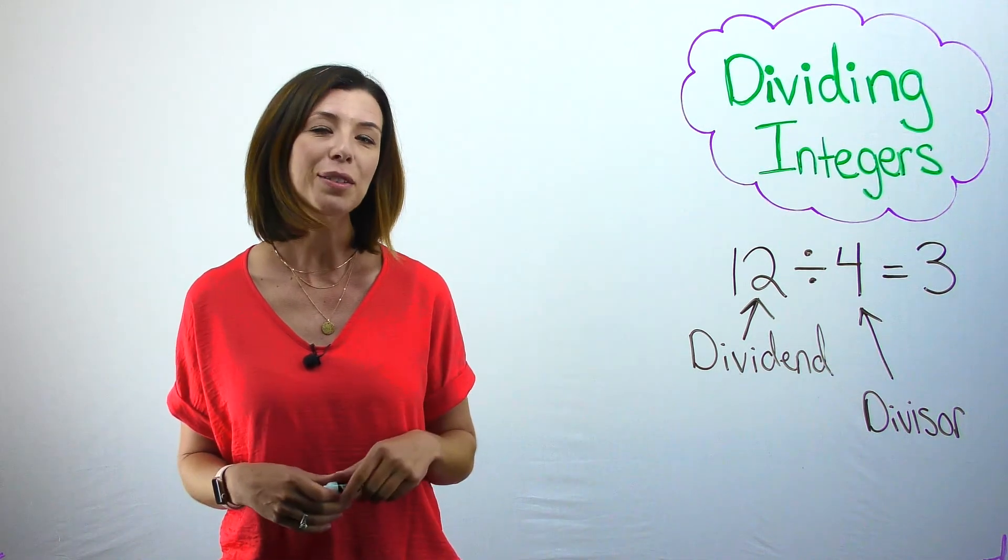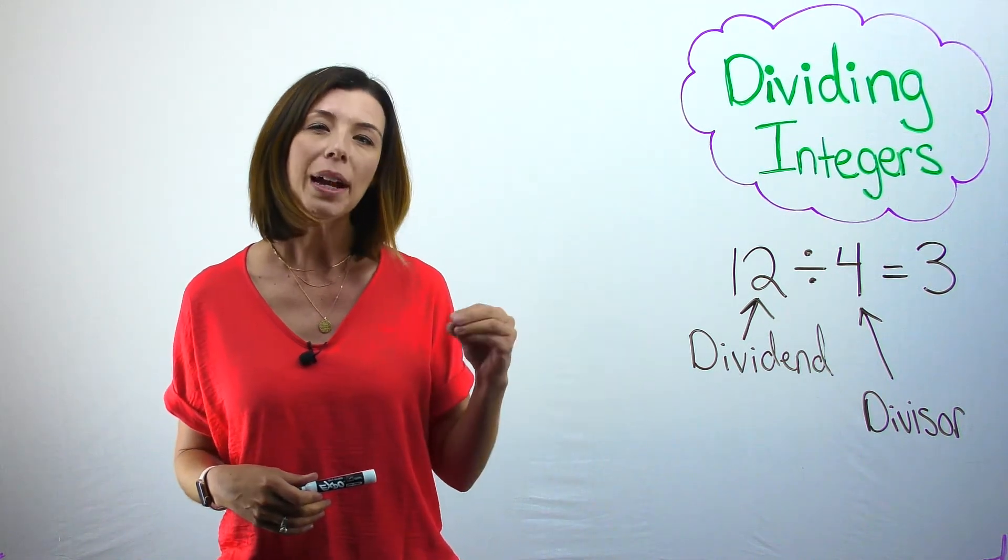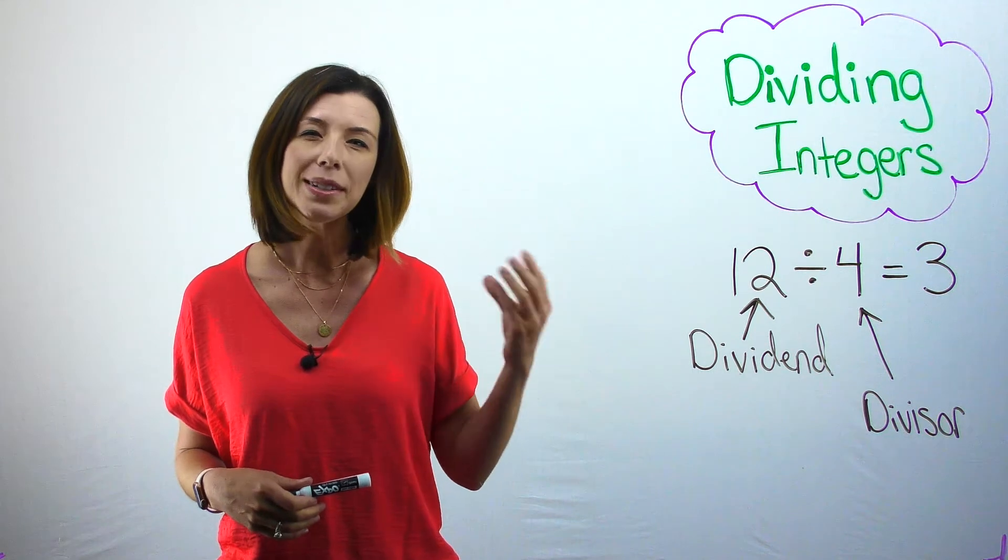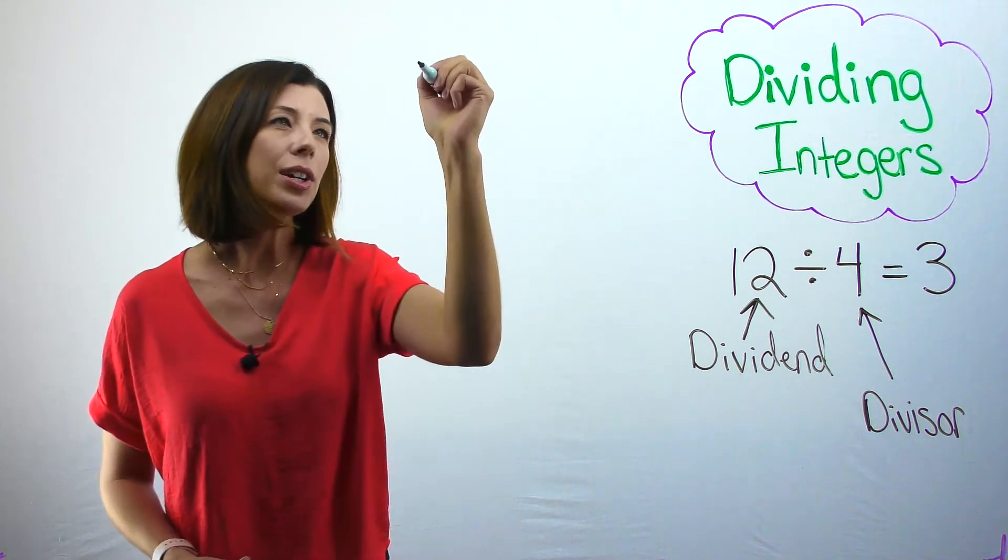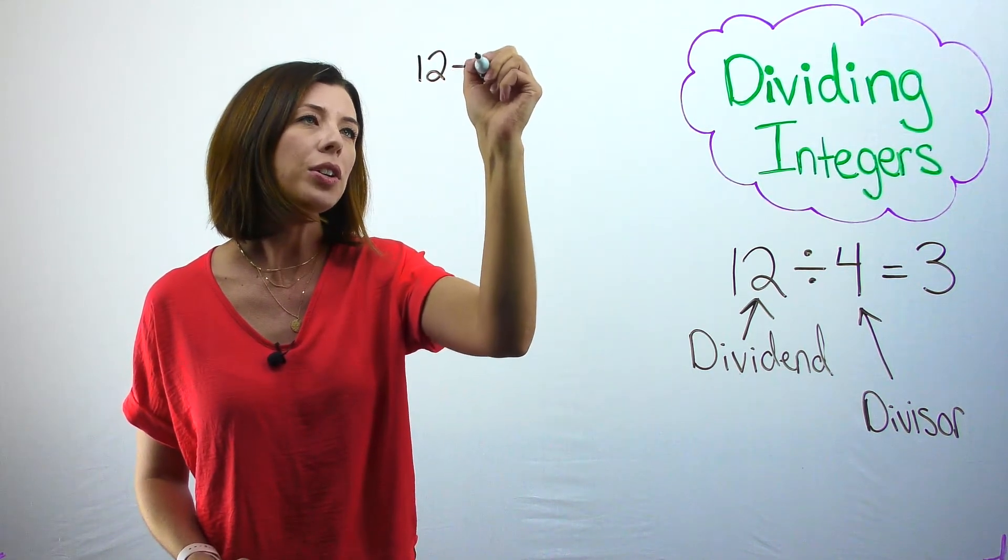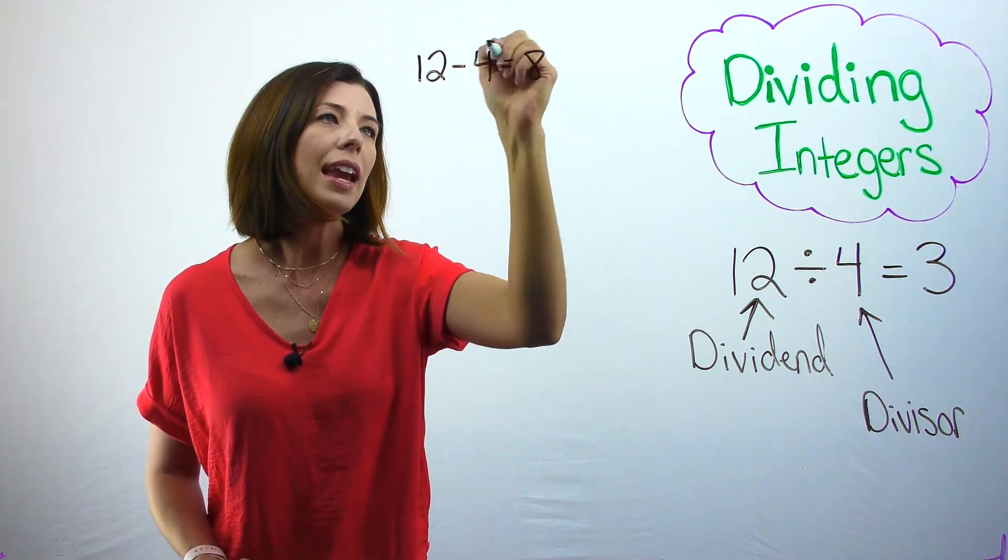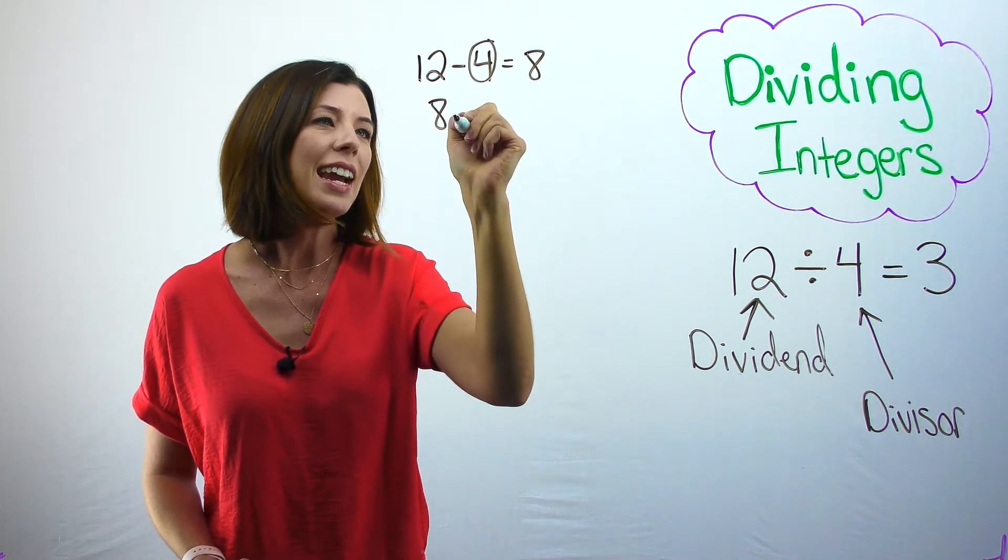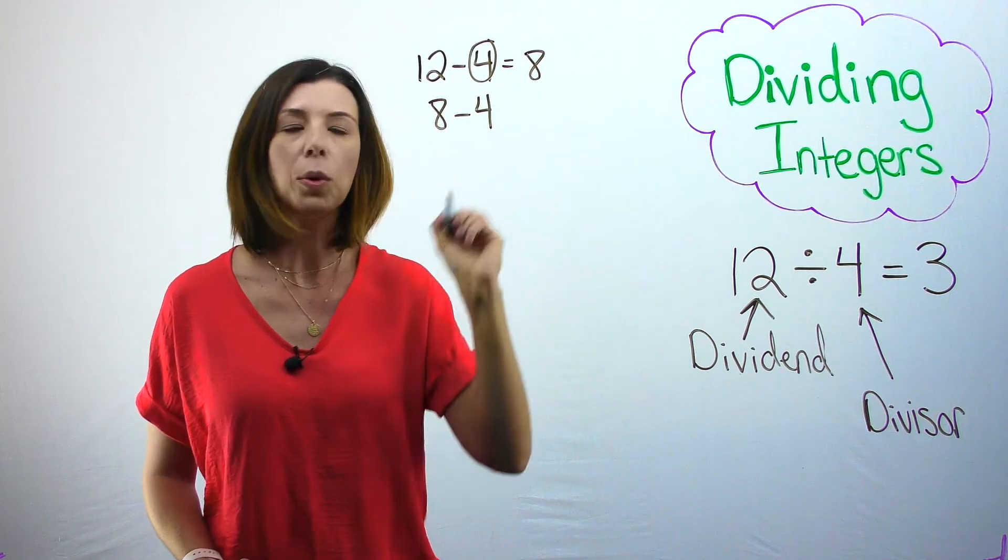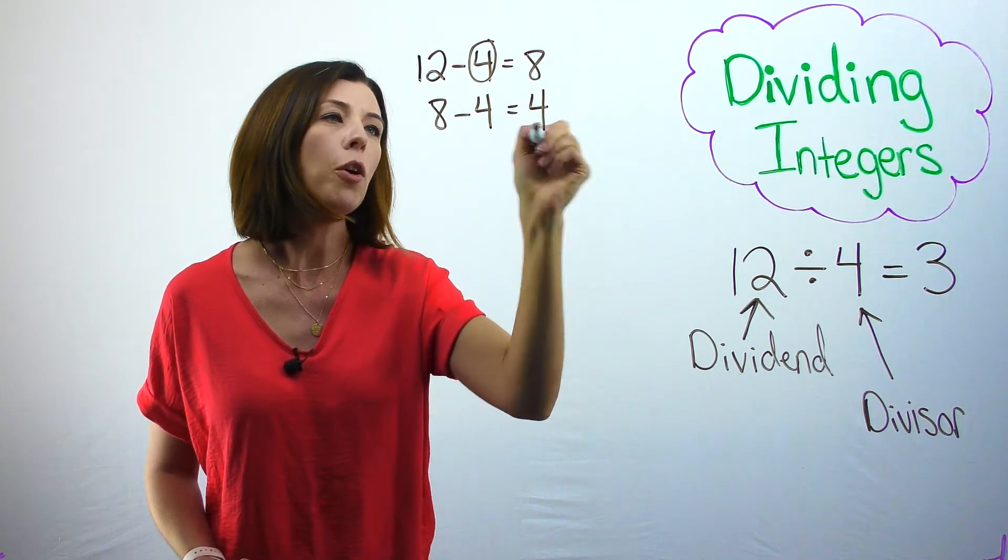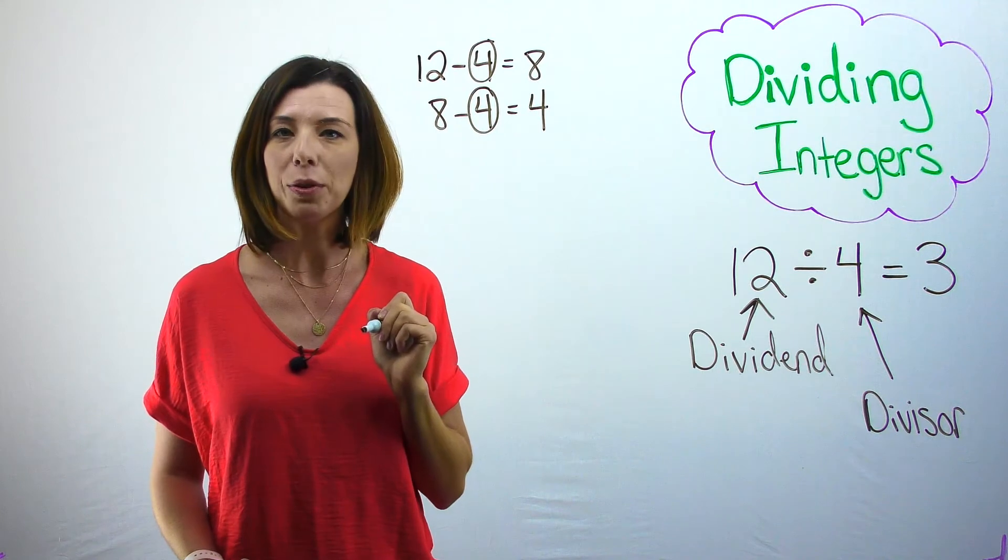I can put this in symbolic form and check my answer by showing that repeated subtraction. So again, I started with 12, and I took off the first group of 4. That left me with 8. Then I had 8, and I took off another group of 4. That left me with 4. There was my other group of 4.